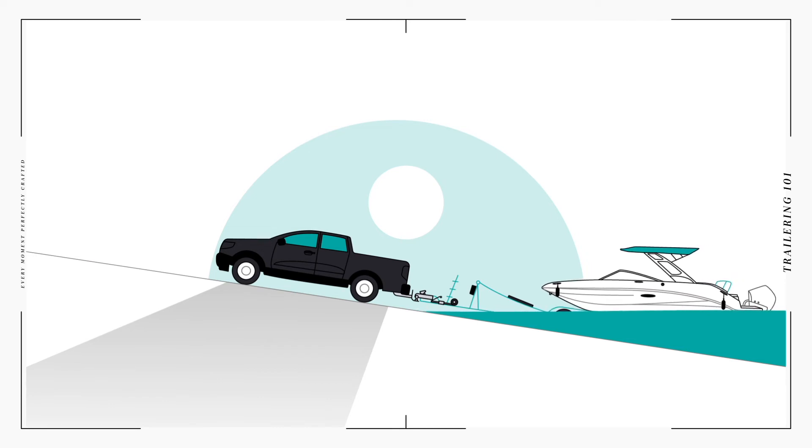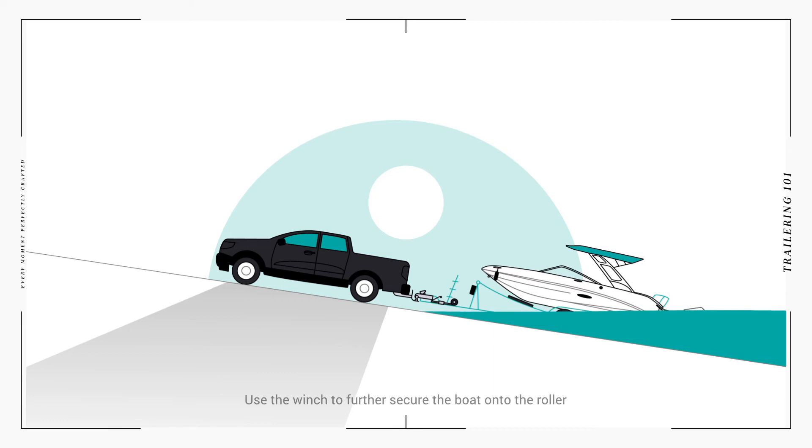The boat driver should slowly drive the boat as far onto the trailer as possible. Then you can attach the tow strap and the safety chain to secure the bow to the mast stand roller.